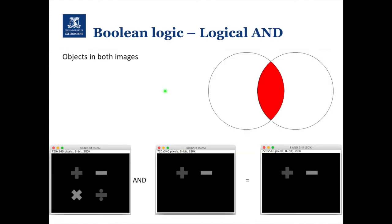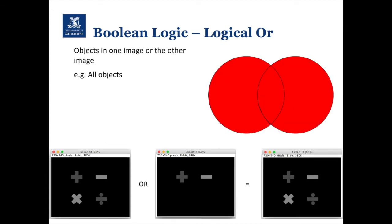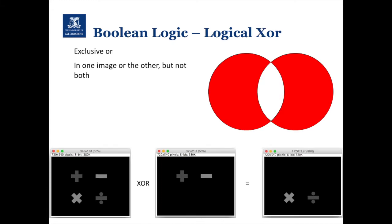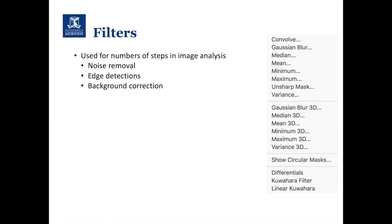The next tools are Boolean logic. A logical AND looks at objects which are in both images — the intersection — so slide1 AND slide2 gives us the plus and minus symbols. Logical OR is objects in one image or the other, giving us all four objects. Logical XOR is exclusive OR — objects in one image or the other but not both — so we only get the multiply and divide symbols. We can use those operations to remove objects from our images that we don't want to analyze.